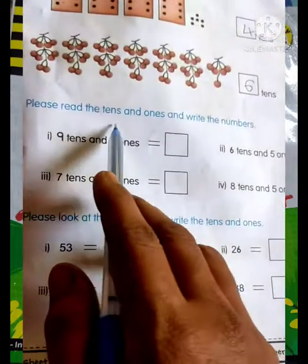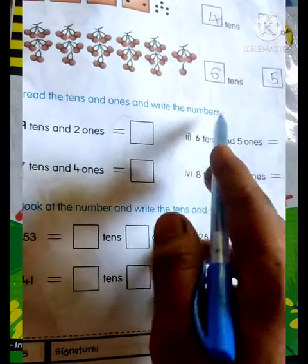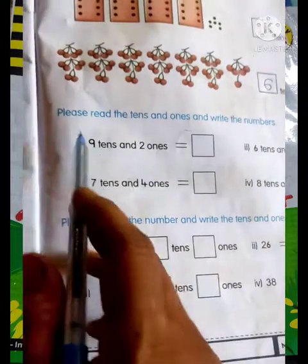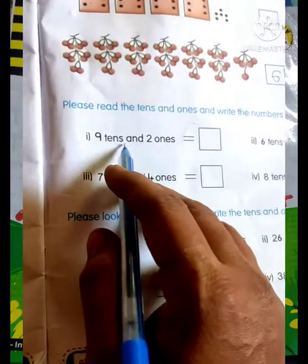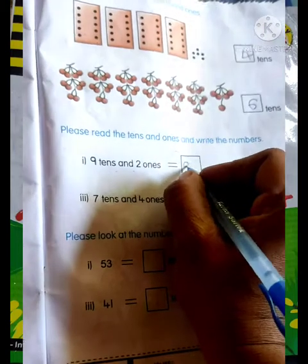Next is please read the tens and ones and write the numbers. Okay friends. Now you have to write your numbers. So first is 9 tens and 2 ones equals 92.